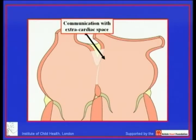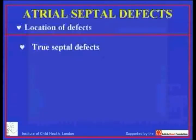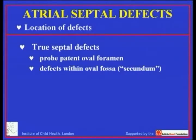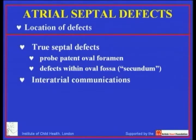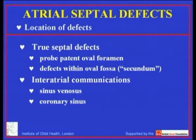So that distinction between folds and septal structures permits us to distinguish true defects between the chambers: the probe patency of the oval foramen, and true defects within the oval fossa — typically called secundum defects — which exist because of deficiencies of the floor of the oval fossa, which is the primary atrial septum. And then there are other holes between the chambers which we believe are better called interatrial communications: the sinus venosus defect and the coronary sinus defect, the phenotypes of which we will show you very shortly.